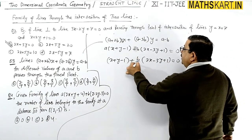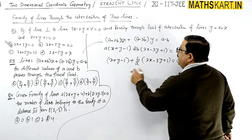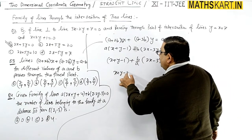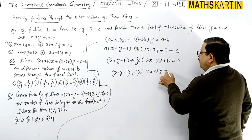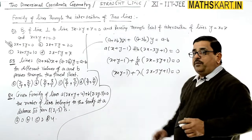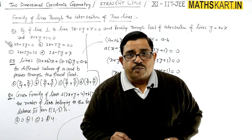This whole portion can be renamed. We write: x+y-1 + λ(2x-3y+1) = 0. This is the family of lines concept.